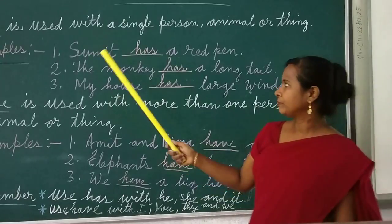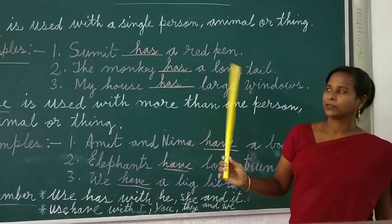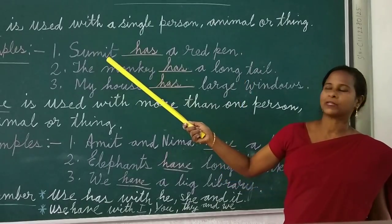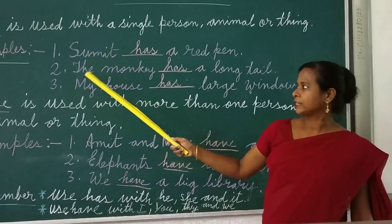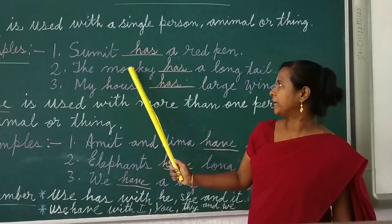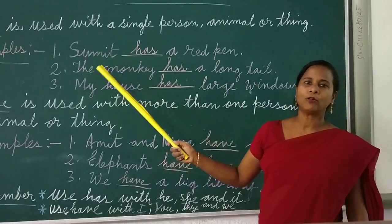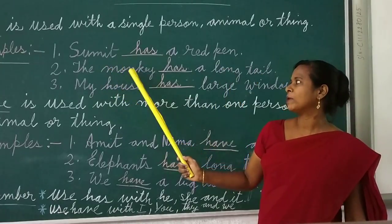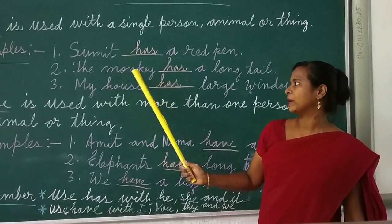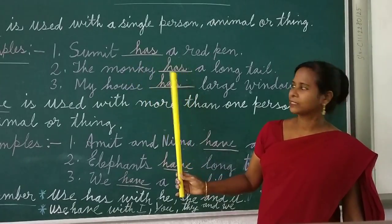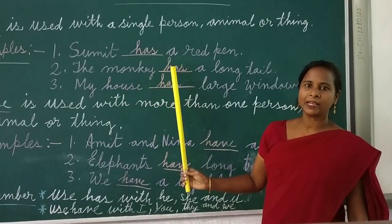Example: Sumit has a ring tail. Sumit here is a single person, that is why 'has'. Next, number 2: The monkey has a golden tail. Monkey here — only one monkey, not monkeys — that is why only one monkey: 'has'. Only one monkey is here, that is why 'has'.